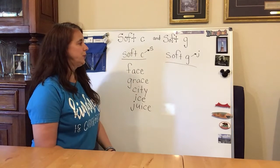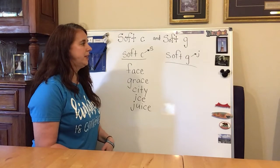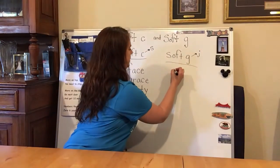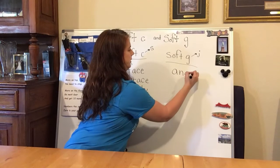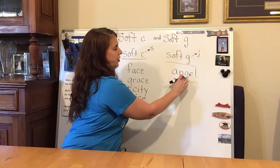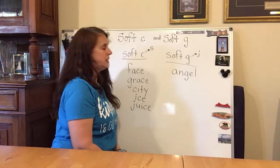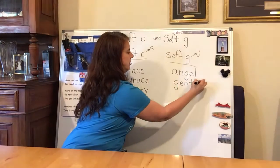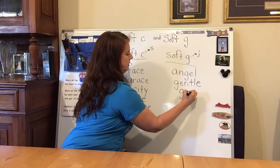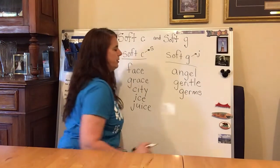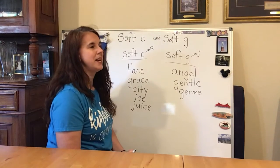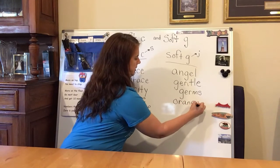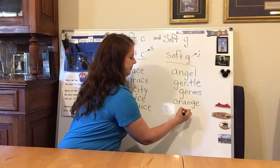Now we're going to go over to the soft G sound, which makes the J sound. Some examples for soft G: Angel. See how the G sounds like a J — angel. Gentle. Please be gentle. Germ. There's a lot of germs going around — that's why we're staying at home. Orange, the color orange. Age.